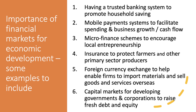Having a trusted banking system to promote household saving is important, particularly if you're familiar with the Harrod-Domar growth model and the Solow growth model — the ways in which the financial system can transfer savings of households and businesses into productive investments. It's also important to have a payment system to facilitate spending and business growth and cash flow. A really good example of that is M-Pesa, developed initially in Kenya, now widely used in large parts of East Africa, which provides a mobile money payment system to facilitate the buying and selling of goods and services.